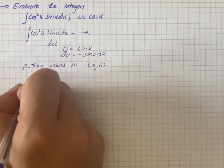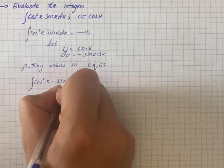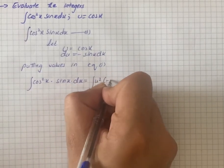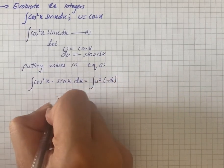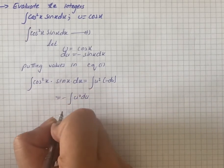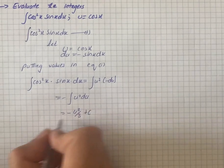So we'll have cos²(x)·sin(x)dx equals u²·(-du), and we can write it as -u²du, which equals -u³/3 + C.